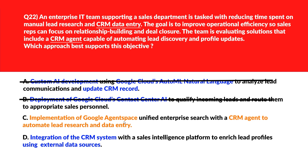We'll move to Option C. Option C says implementation of Google Agent Space unified enterprise search with a CRM agent to automate lead research and data entry. However, this technology is a conceptual prototype and not a generally available product for enterprise CRM automation. We'll keep this option for now.